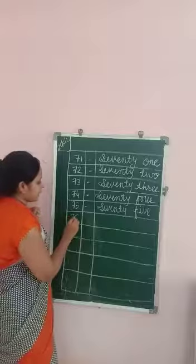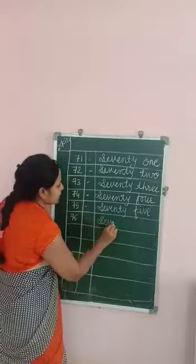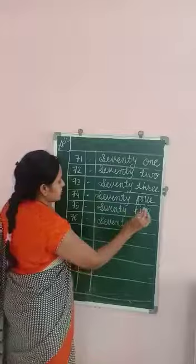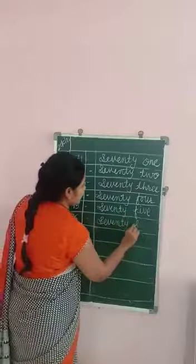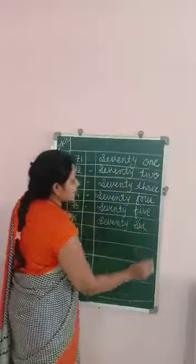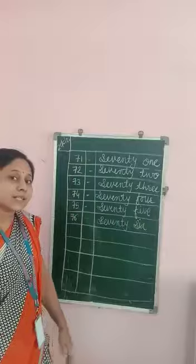7, 6 — 76. S, E, V, E, N, T, Y — 70. S, I, X — 76.